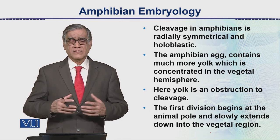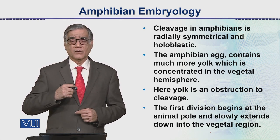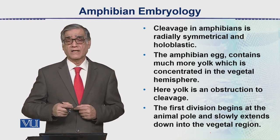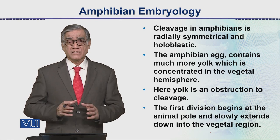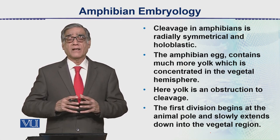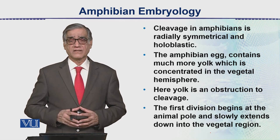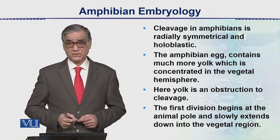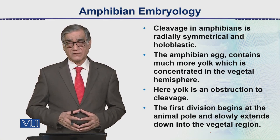The first cleavage takes its start from the animal pole and then spreads down to the vegetal pole — this is the two-cell stage. The second cleavage is at right angles to the first one, producing the four-cell stage.